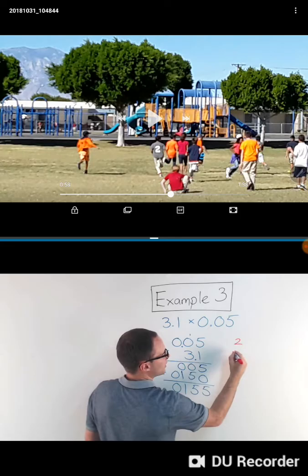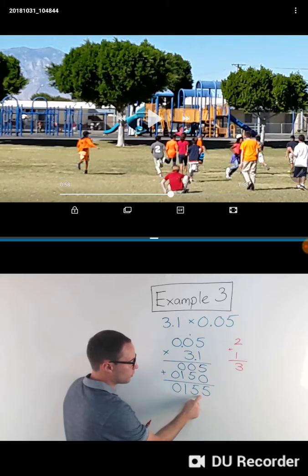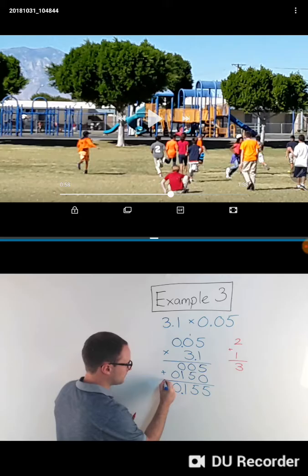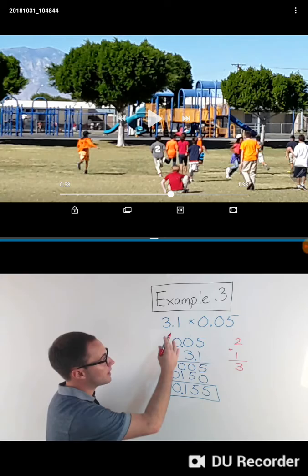Now the last step is to count my decimal places. This here, 0.05, has 2. That has 1. Add them together. My answer should have 3 decimal places. So 1, 2, 3. My decimal point goes right there.